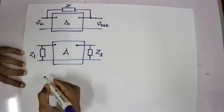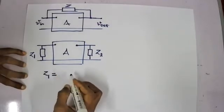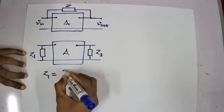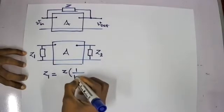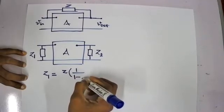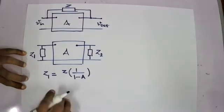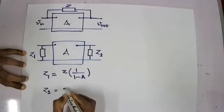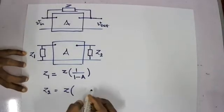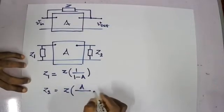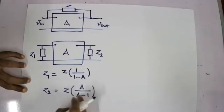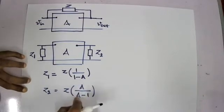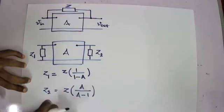So we can write Z1 as Z divided by one minus A, or in other words, dividing all terms by A, you can write it as Z into one over one minus one over A. Both are correct terminologies.